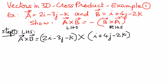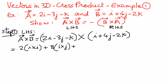And therefore, when we expand this out, it is going to be 2 times i cross i, plus 2 times 4 is 8 times i cross j, plus 2 times negative 2 is negative 4 times i cross k. So we've exhausted the first component of the first vector.